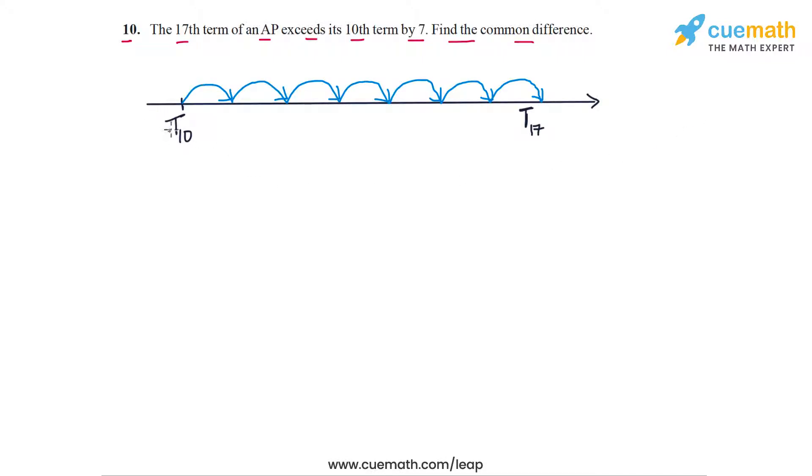Look at this figure which shows the terms of this AP. This term here is t10, the 10th term, and this term here is t17, the 17th term. To get from the 10th term to the 17th term, we have to make these seven jumps, and each jump is of the size of the common difference. For example, the first jump is d, the second jump is d, and so on. We have to make seven jumps of d to get from t10 to t17.